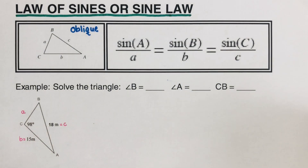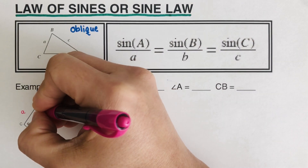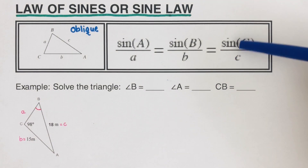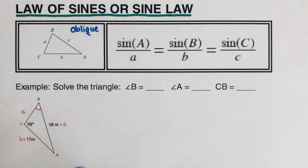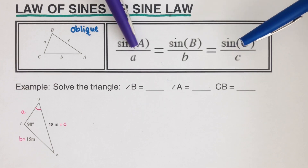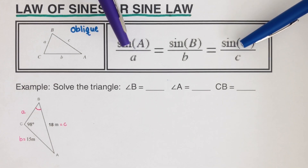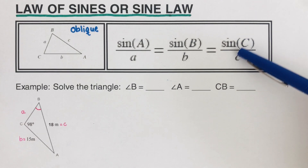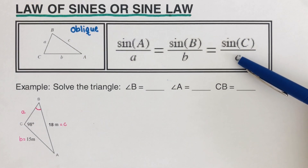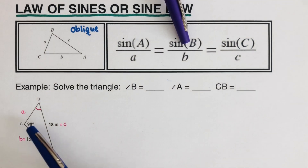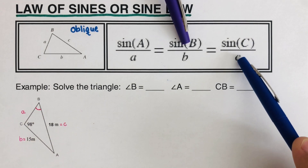Our first task is to solve for angle B. We have angle C equal to 98° and side c equal to 18, so that part of the equation is complete. We cannot pair A with C because both angle A and side a are missing. So we use the B and C combination: angle B is missing but side b is 15, and angle C is 98 with side c equal to 18.